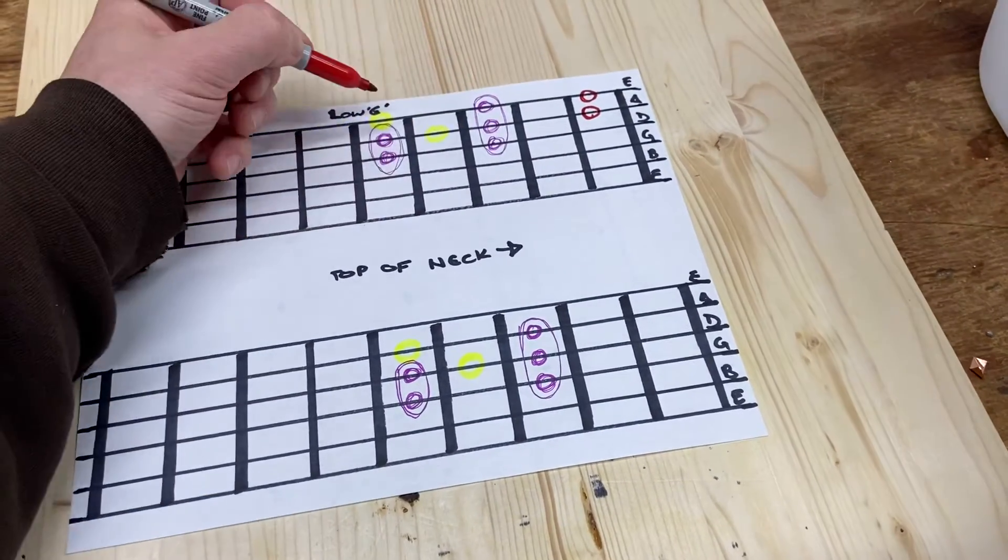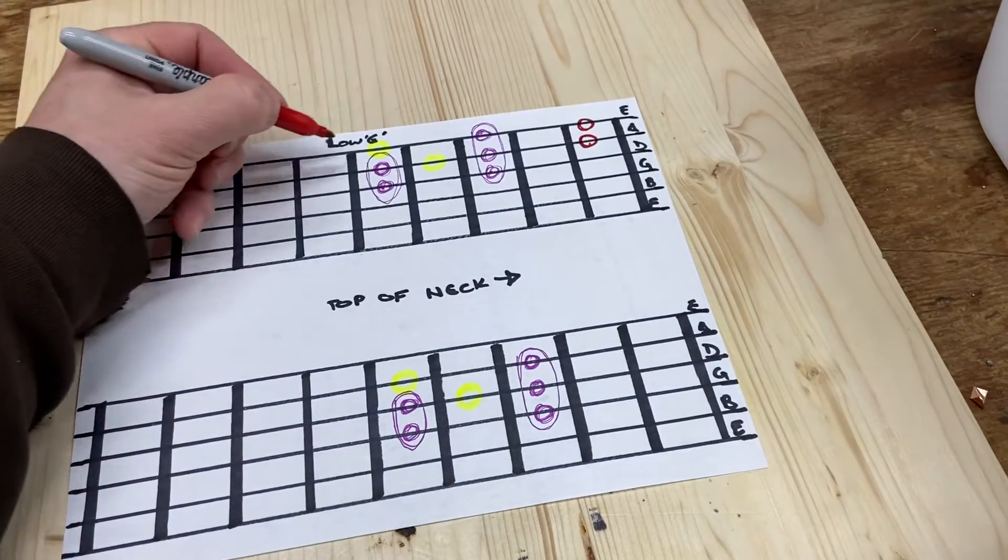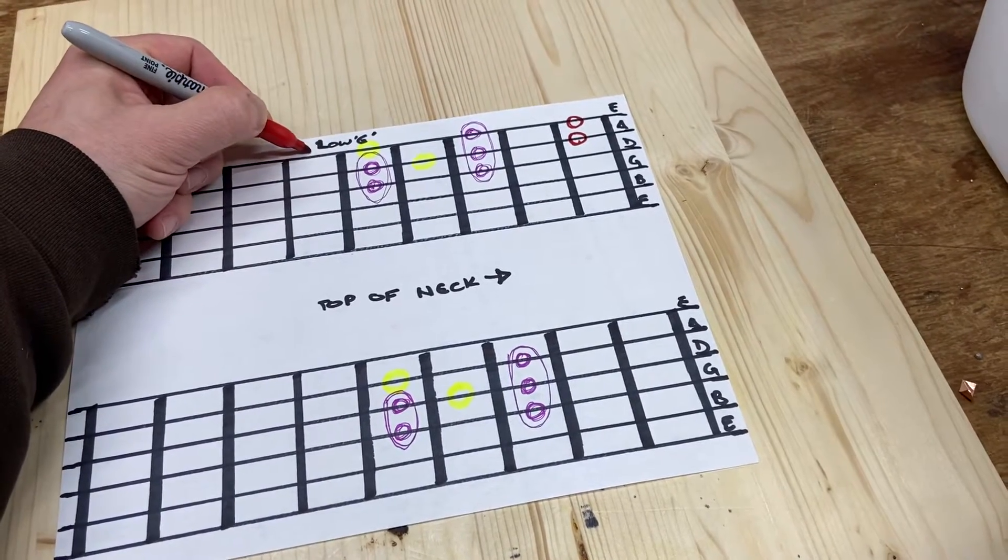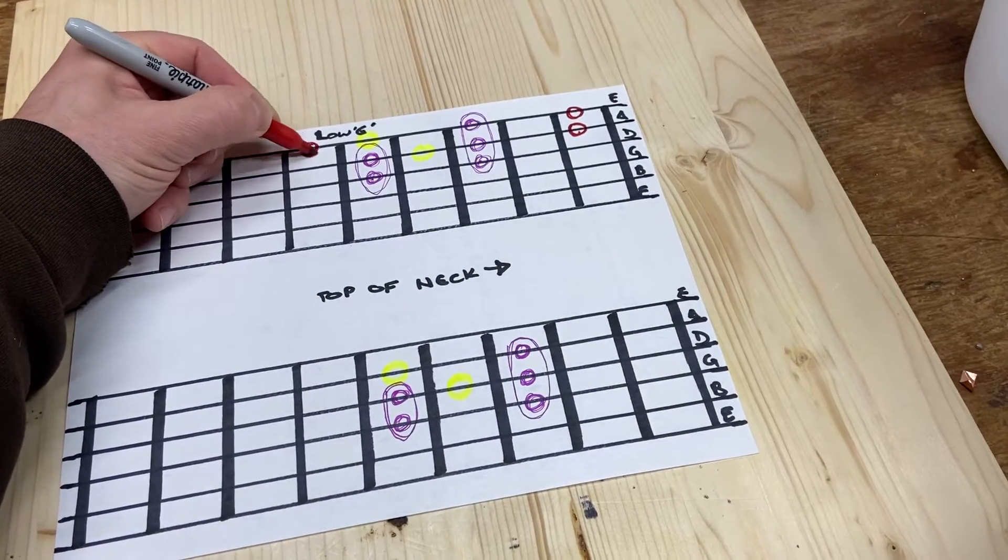This guy and this guy are octaves, just like this guy and this guy. And over here, this passing note at the top, we're going to give him a buddy that you can use almost interchangeably if you're playing the blues.